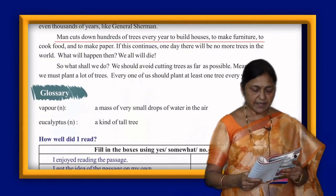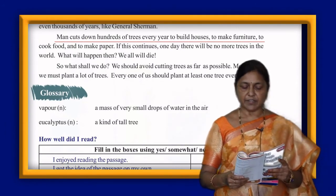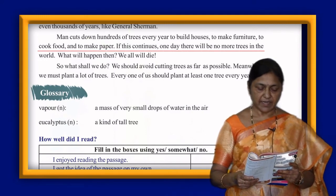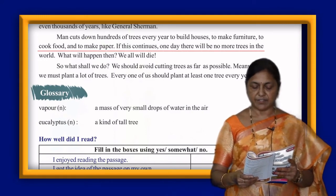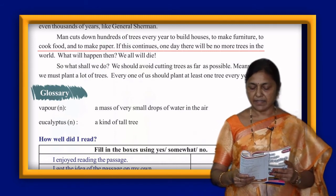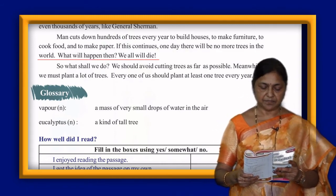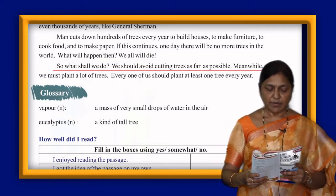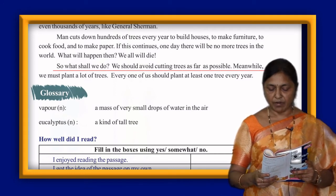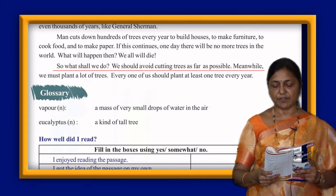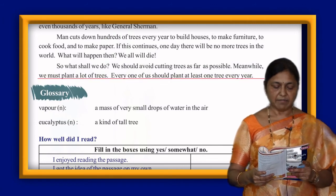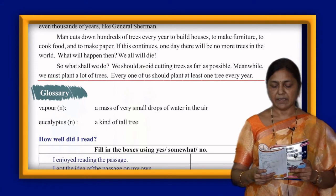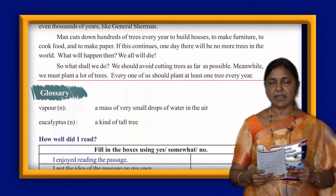Man cuts down hundreds of trees every year to build houses, to make furniture, to cook food, and to make paper. If this continues, one day there will be no more trees in the world. What will happen then? We will all die. So what shall we do? We should avoid cutting trees as far as possible, and we must plant a lot of trees.